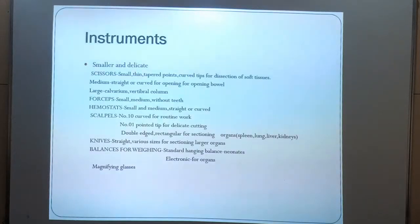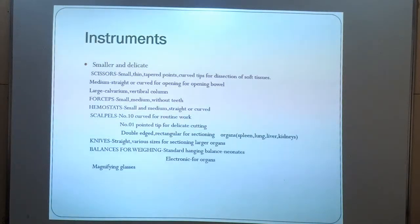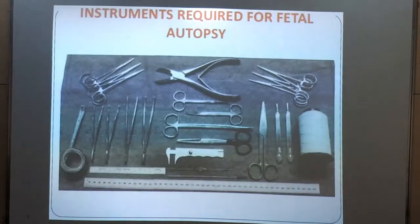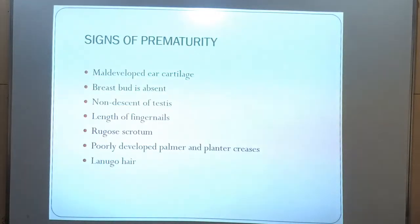These are the instruments required for conducting a perinatal autopsy: mainly scissors, forceps, hemostats, scalpels — number 10 and number 1 — knives, and balances for weighing, including a standard weighing balance and an electronic balance for organs. These are some of the instruments required for fetal autopsy.